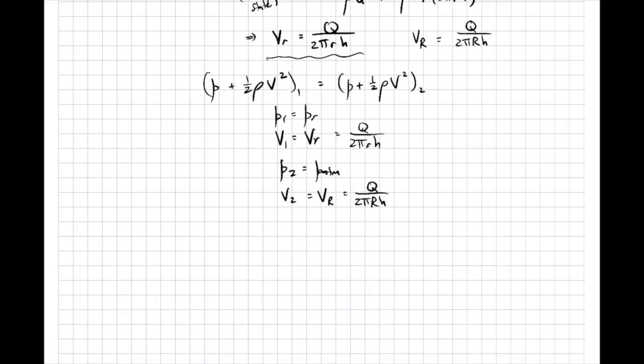So we can substitute these in to Bernoulli's equation and rearrange. And what I want to do is solve for the pressure at little r. So the pressure at little r will end up being P atmosphere plus one-half rho. And I'm just trying to do this algebra in my head, so hopefully I don't make any mistakes. Should be 1 over r squared minus 1 over little r squared. I think I did that right without any mistakes.